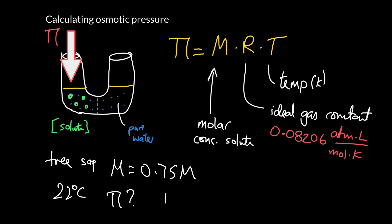We can use that to calculate the osmotic pressure, so π. And we can just plug it into the equation. So π is MRT, so the molar concentration of the solute in the tree sap is 0.75 molar. We can write that as moles per liter. The gas constant, 0.08206 atmosphere, liter, mole Kelvin, kind of running out of room here.